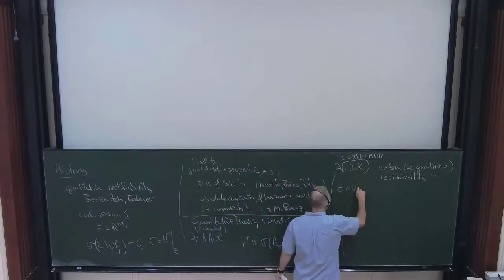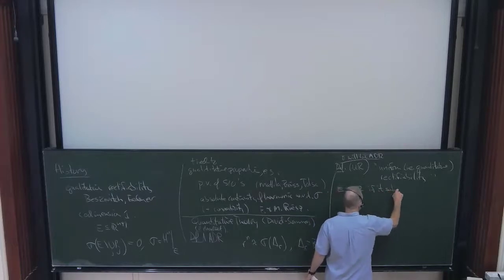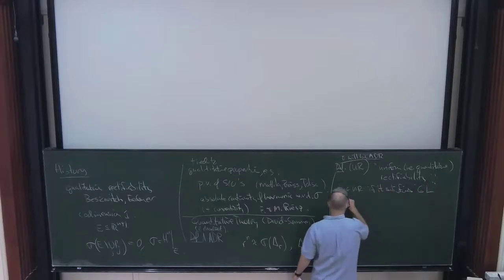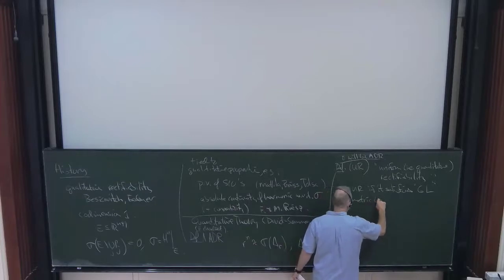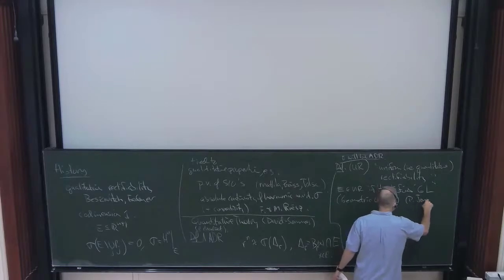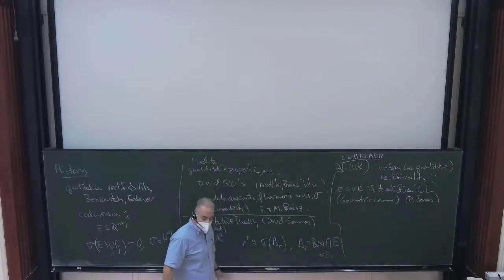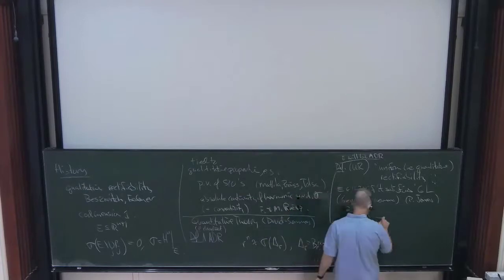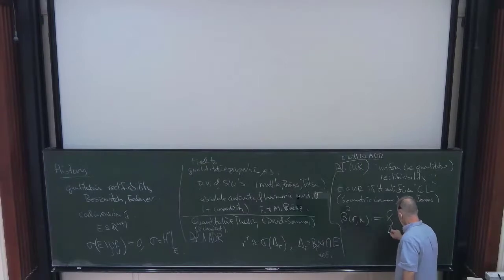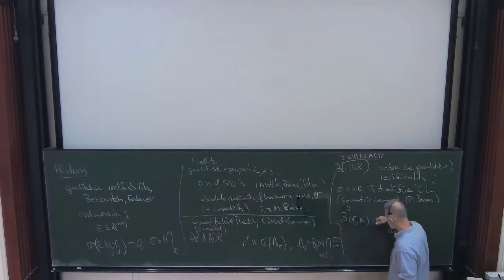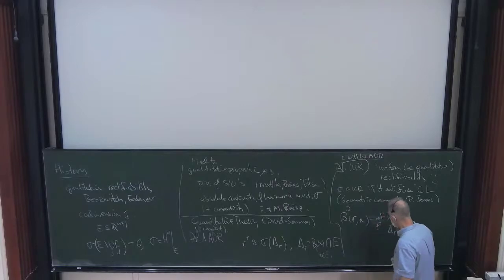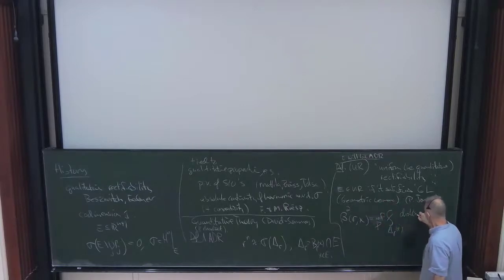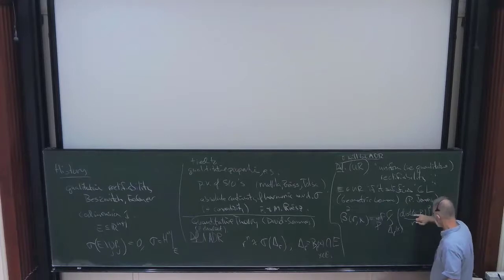So then E is going to be UR if it satisfies GL, the geometric lemma, which actually was first introduced by Peter Jones in connection with what he called the analyst traveling salesman problem. So what does the geometric lemma say? It says we're going to define a quantity beta of R and X. And let me define the square of it. It's going to be defined to be the mean value over the surface ball delta R of X. Sorry, I need to take an infimum here. I'll tell you what I'm taking the infimum over in a second.